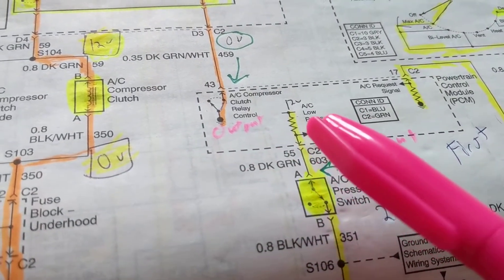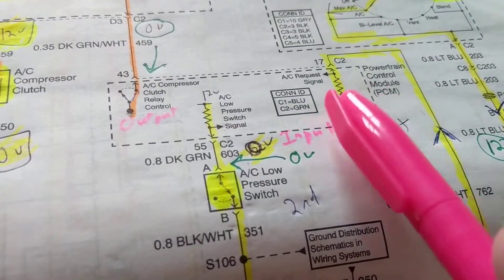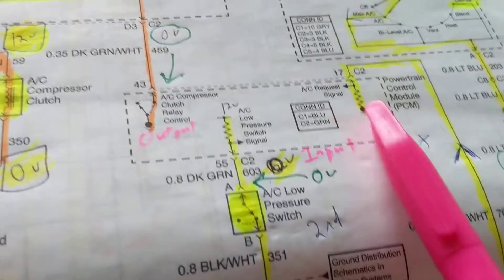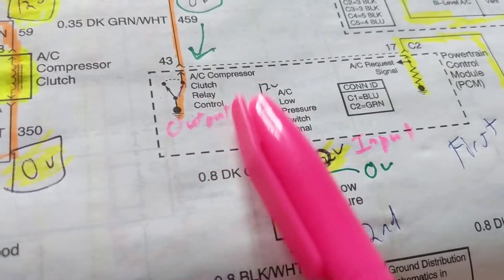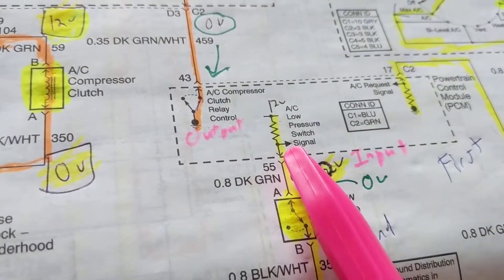Now, if you have a scanner, the scanner will tell you an AC request signal that you have a request signal. It will tell you that yes or no. And it will tell you if it controlled the clutch relay. Either yes or no. But most people don't have scanners.